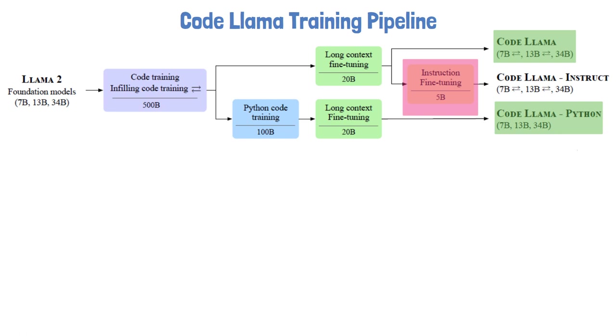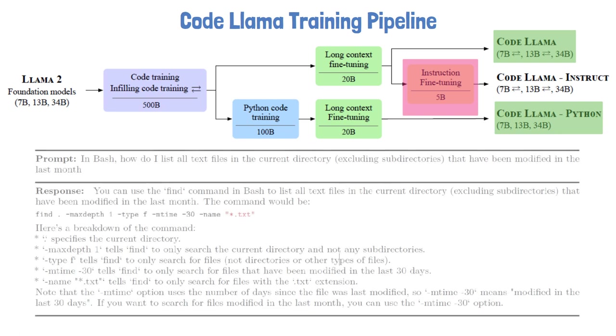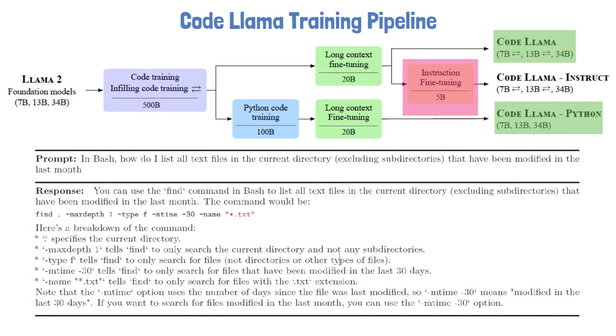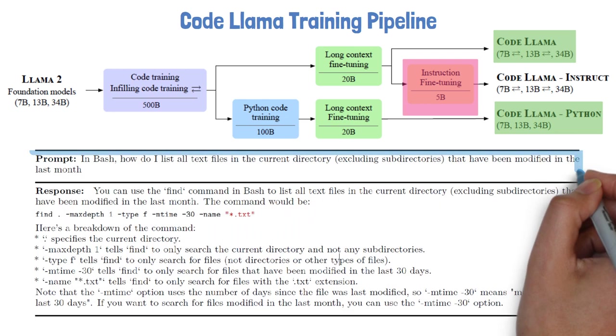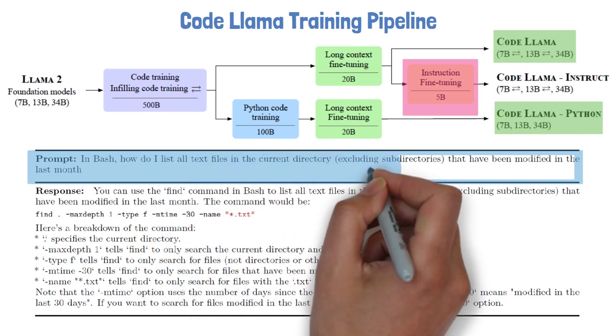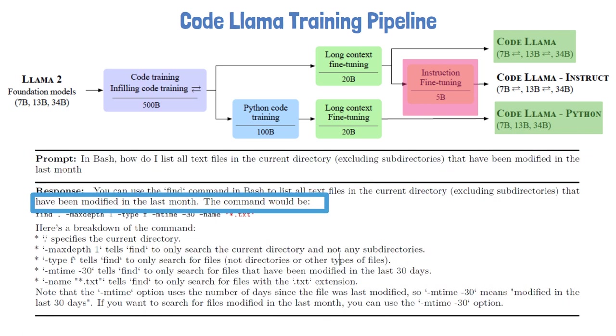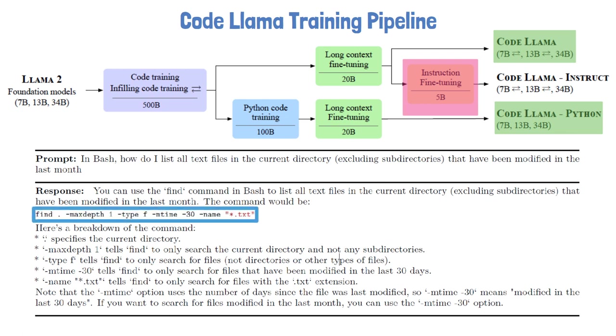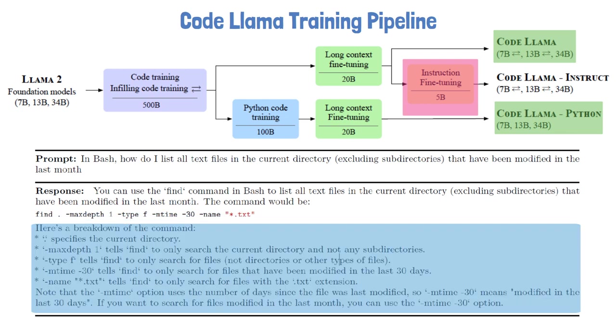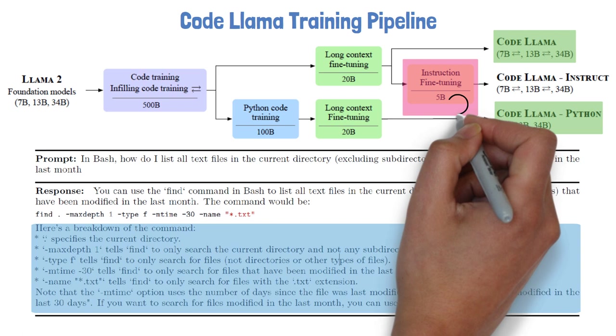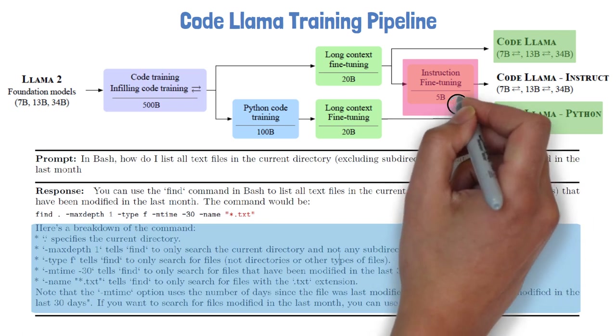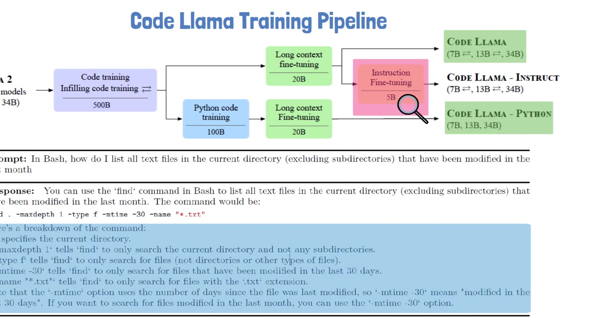As an example for what we can do with the instruction fine-tuned model, we can see here an example from the paper. Rather than providing a code context to complete or fill, we provide the model with a prompt to create a bash command with few conditions, and the model yields the proper command, and also an explanation about each part of the command. The instruction fine-tuning is very interesting, so let's zoom in to understand more about what happens here.